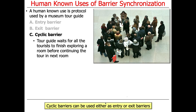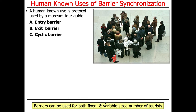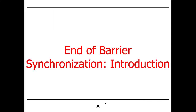It's also worth noting that barriers can be either fixed or variable-sized in terms of the number of participants. A tour guide might keep track of people by count, or some people might drop off at certain points along the way — kind of like a hop-on, hop-off bus tour — but you still ensure you don't start the next phase prematurely. That's a quick overview of barrier synchronization, and we'll talk about how this is supported in Java in the next discussion.